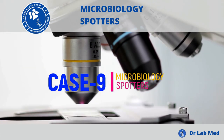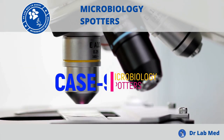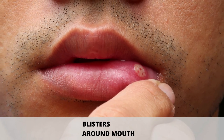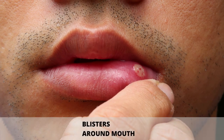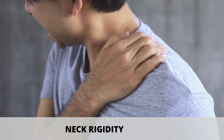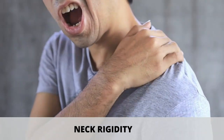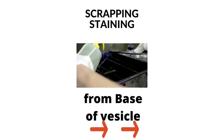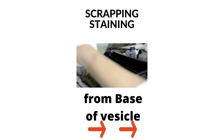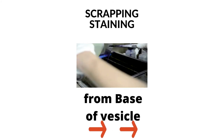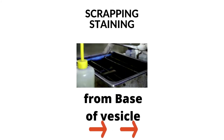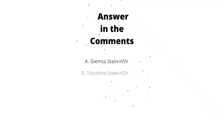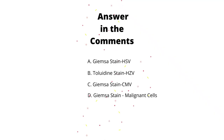Coming to the next case: a 25-year-old man presented with complaints of blisters around the mouth for the past 5 days. On examination, neck rigidity is seen. Scrapings are taken from the base of the vesicular lesions and staining is done. This picture is obtained under a microscope — identify the staining and the peculiar presentation. These were the options.